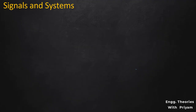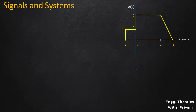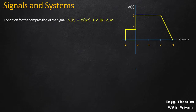Let's take an example to understand the two cases of time scaling. Consider a signal X(T) which has the value of one when T is between minus one and zero, the value of two when T is between zero and two, and X(T) is equal to zero when T is equal to three. For time compression, Y(T) = X(alpha*T) where alpha lies between one and infinity. Let alpha equal 2, so we need to plot Y(T) = X(2T).